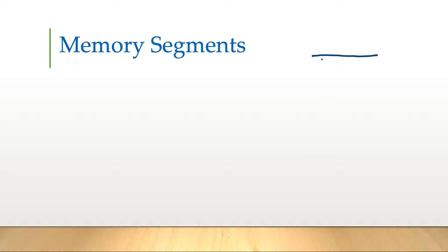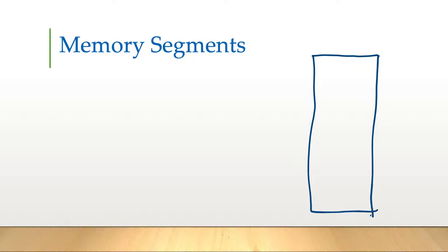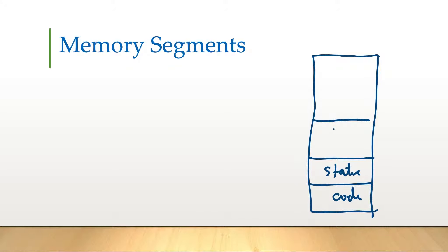Now let's see what these segments look like. When we run any application, these are the four segments: the code segment, then static or global segment, then stack memory, and finally heap.